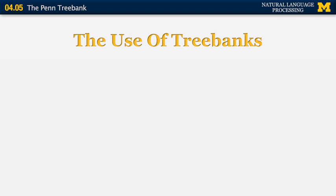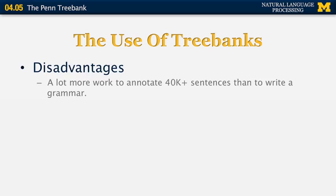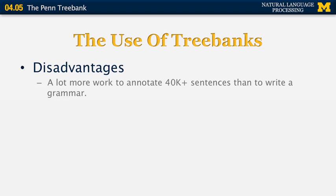So what is the Penn Treebank used for? It has some disadvantages — the general idea of using treebanks seems like a non-starter because it takes a lot more work to annotate 40,000 sentences than to write a grammar. But this may be only a superficial disadvantage. There are actually some advantages: you can use the Penn Treebank to count statistics about different constituents and phenomena — for example, how many times does a noun phrase turn into a specific right-hand side when it's part of the subject or object of a sentence.